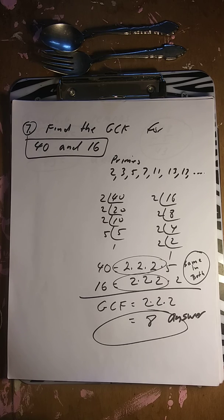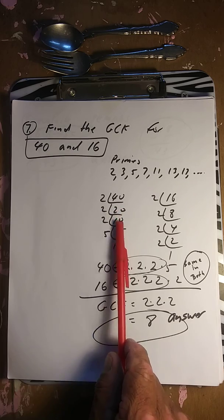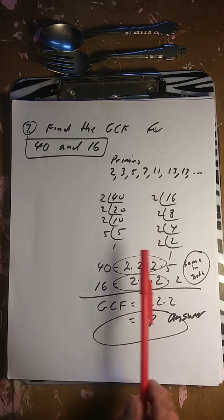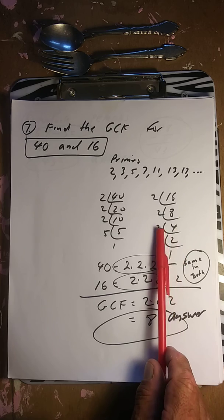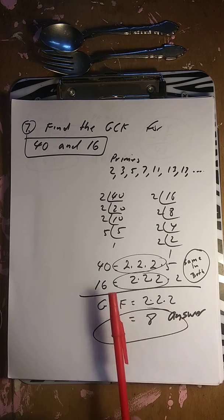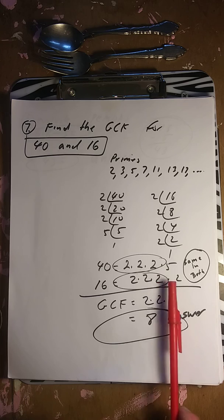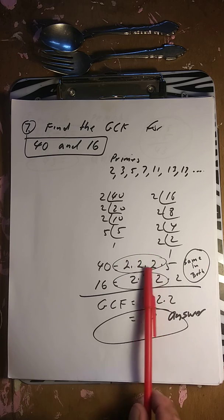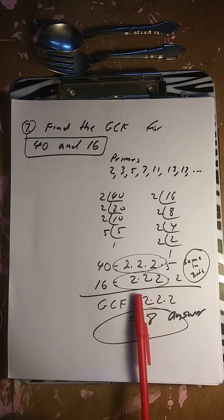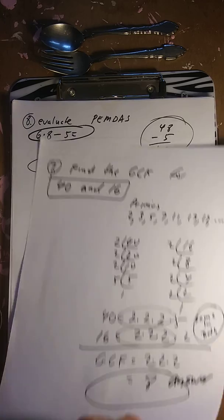Find the greatest common factor of 40 and 16. Factor 40: 2, 2, 2, 5. Factor 16: 2, 2, 2, 2. The common factors are three 2s: 2 times 2 times 2 is 8. So the GCF is 8.